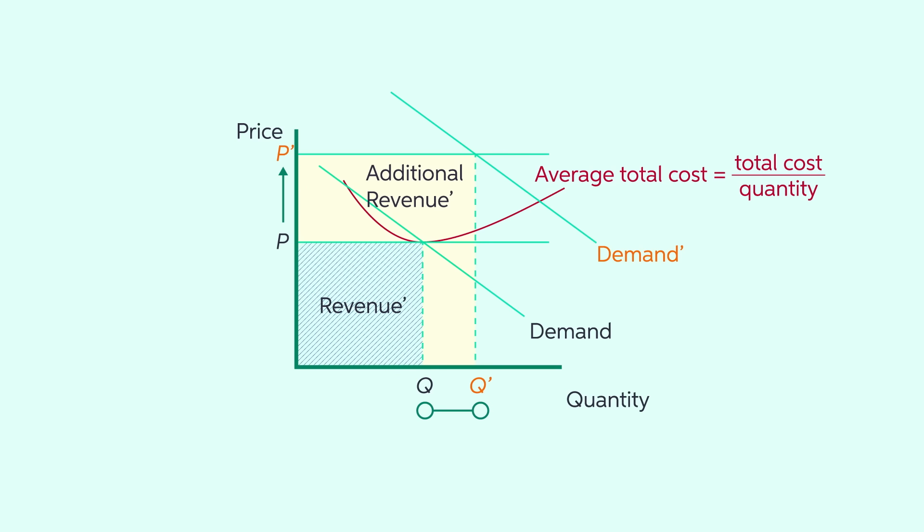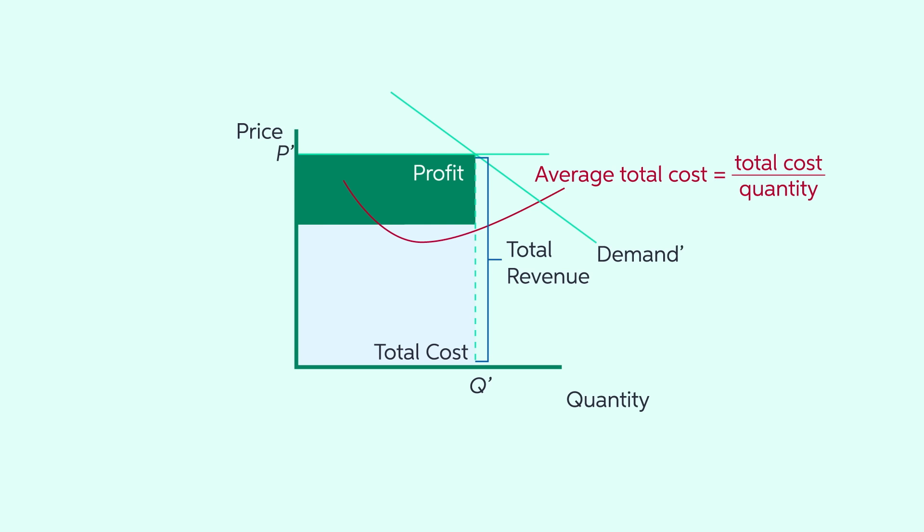But how much of that revenue is actually profit? Now remember, profit is total revenue minus total costs. And since the new price is higher than the average total cost, the firm has additional revenue that is more than their total cost profit. And that's represented by the green box.